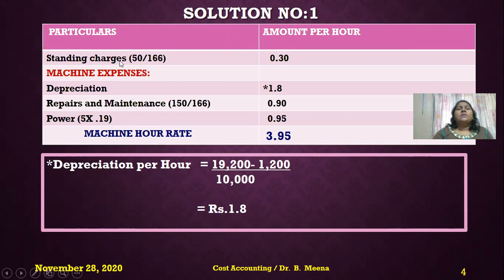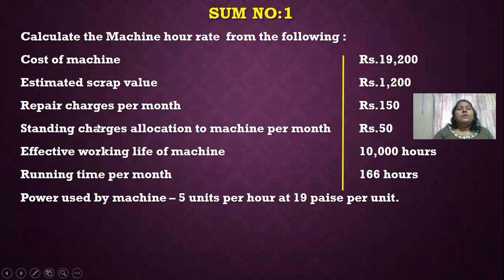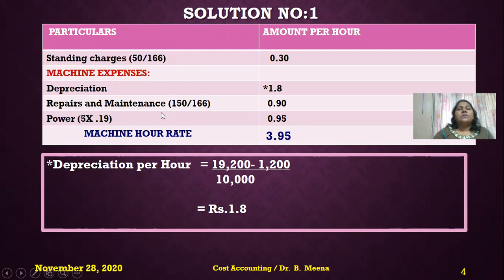Standing charges: 50 divided by 166 = 0.30 per hour. Under machine expenses, depreciation is the first item — I'll post 1.80 from the working notes. Next, repairs and maintenance is also given per month: 150 divided by 166 = 0.90 per hour.